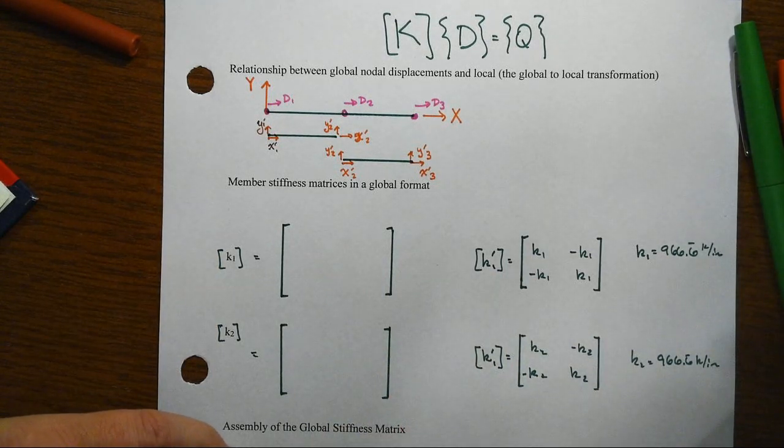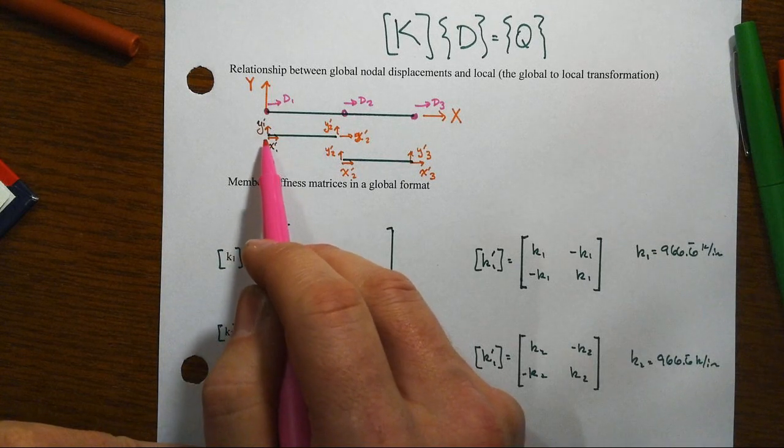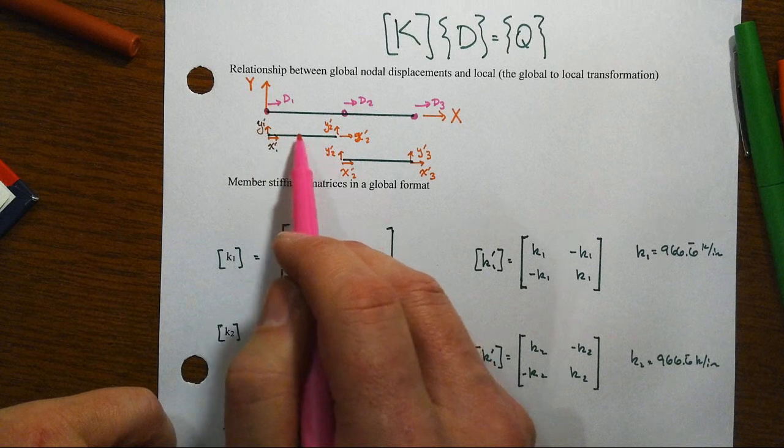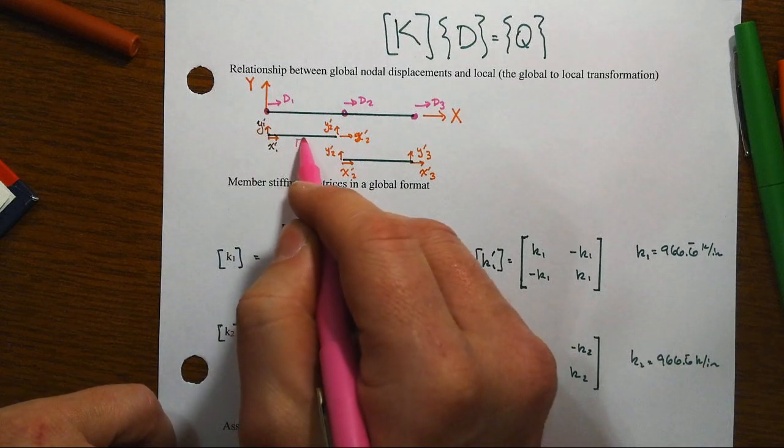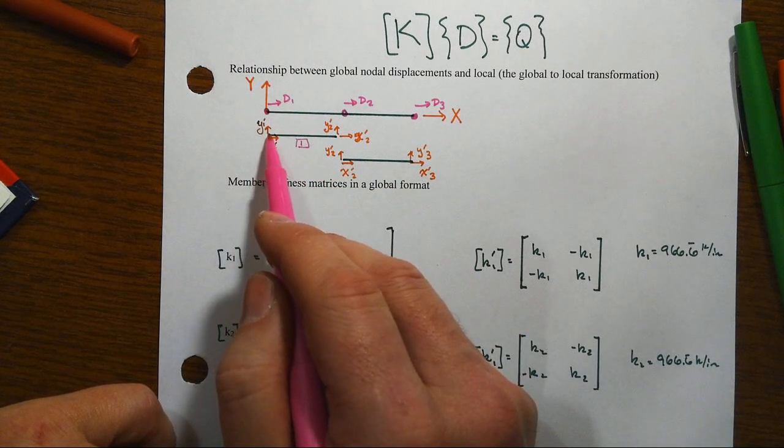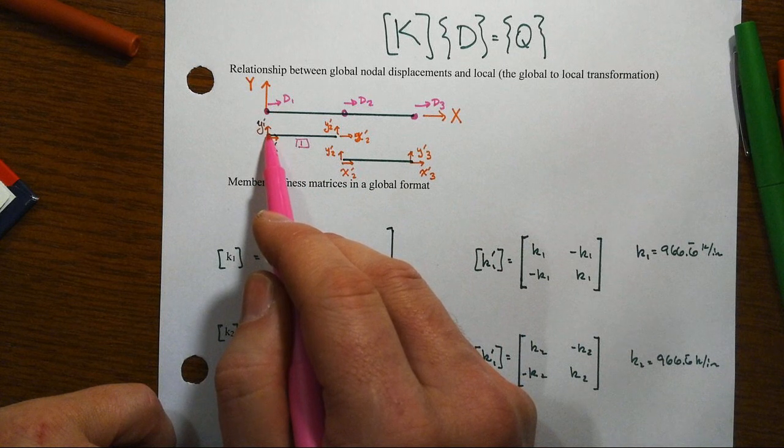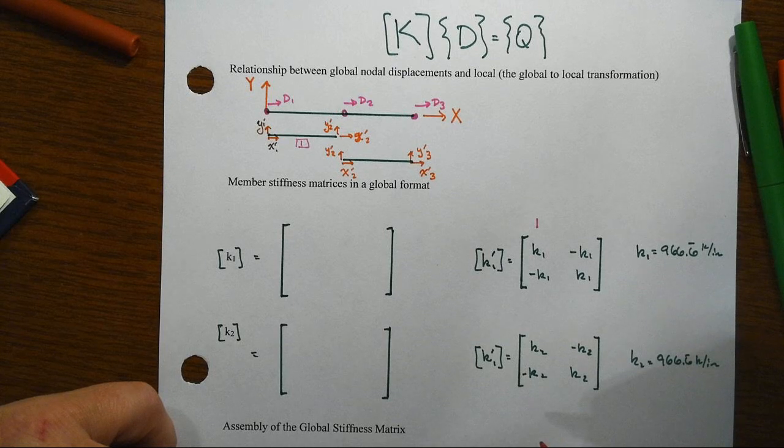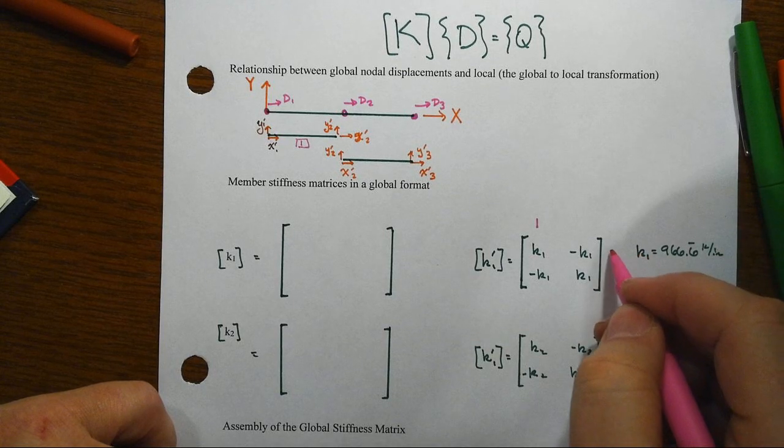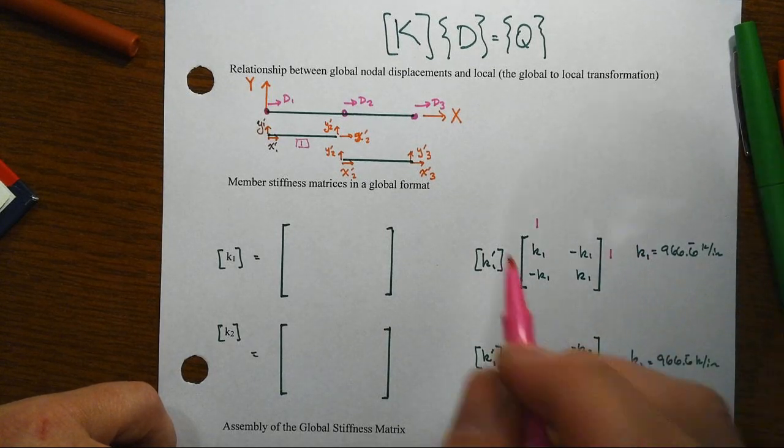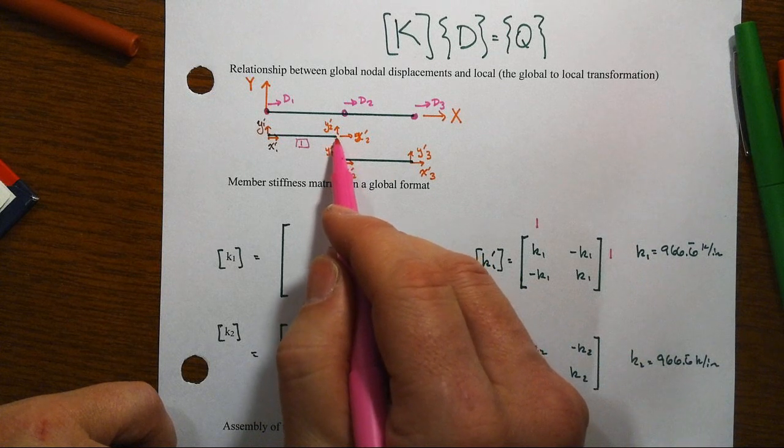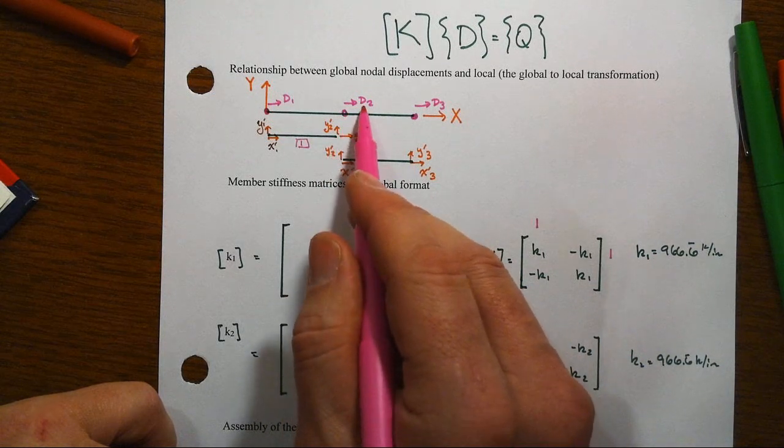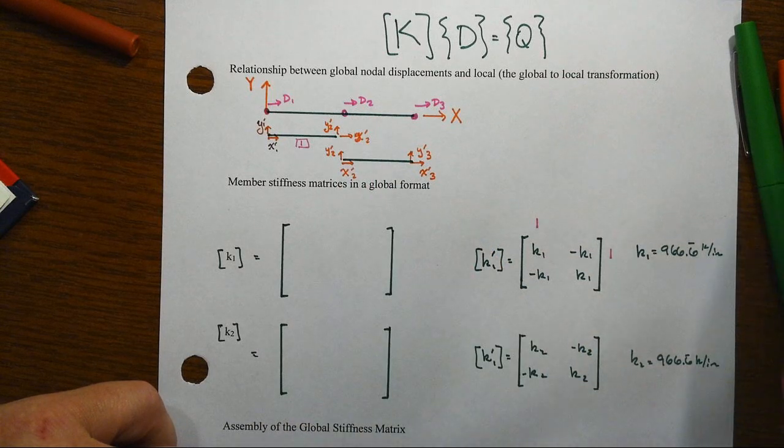All right, we can't do that initially because of course things don't line up. For instance, when you look at member one, its first degree of freedom here at the left lines up perfectly with the global one, so let's put a 1 there. And so put a 1 here too because this is a symmetric matrix. Now its local 2 also, when little x prime 2 is positive that's the exact same value as big capital D2, so we'll line those up also.